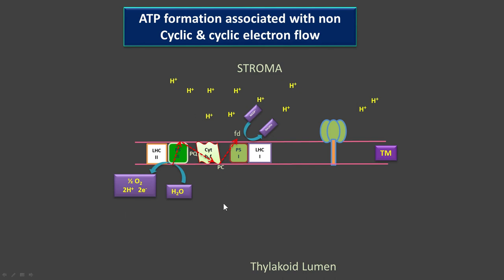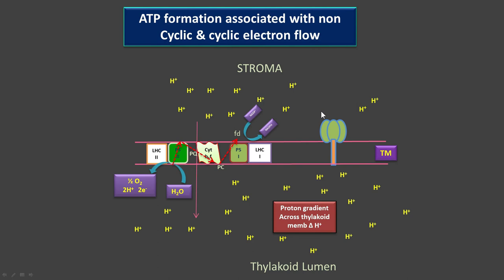The two sources of proton accumulation during non-cyclic electron traveling are: photolysis of water, and from PQH2 through the Q cycle. A proton gradient establishes across the membrane, and this is the requirement for ATP formation. In cyclic electron flow, PQH2 is the only source to accumulate protons in the thylakoid lumen, because there is no photolysis of water — PS2 is stopped during cyclic electron traveling.